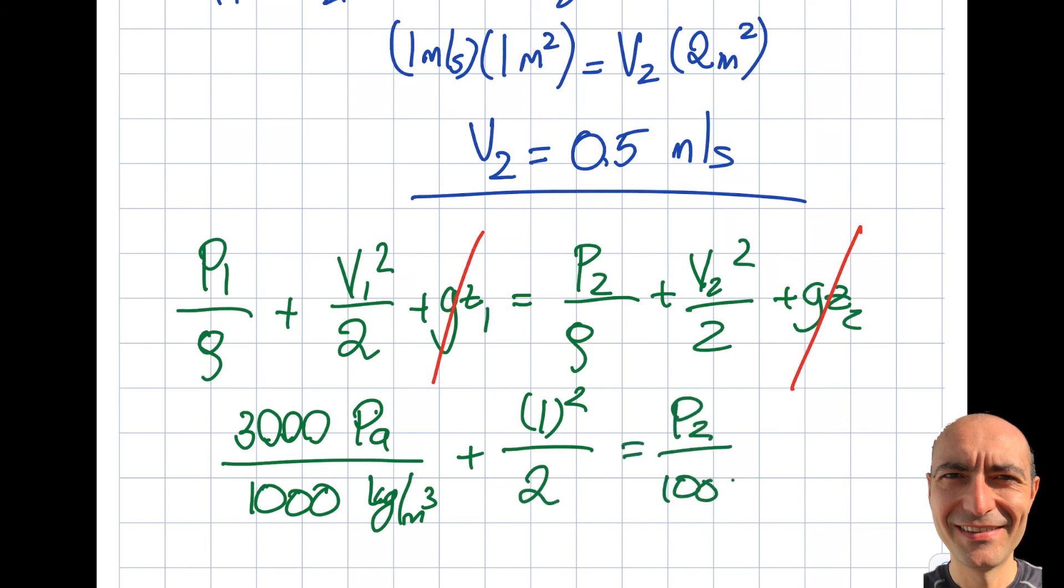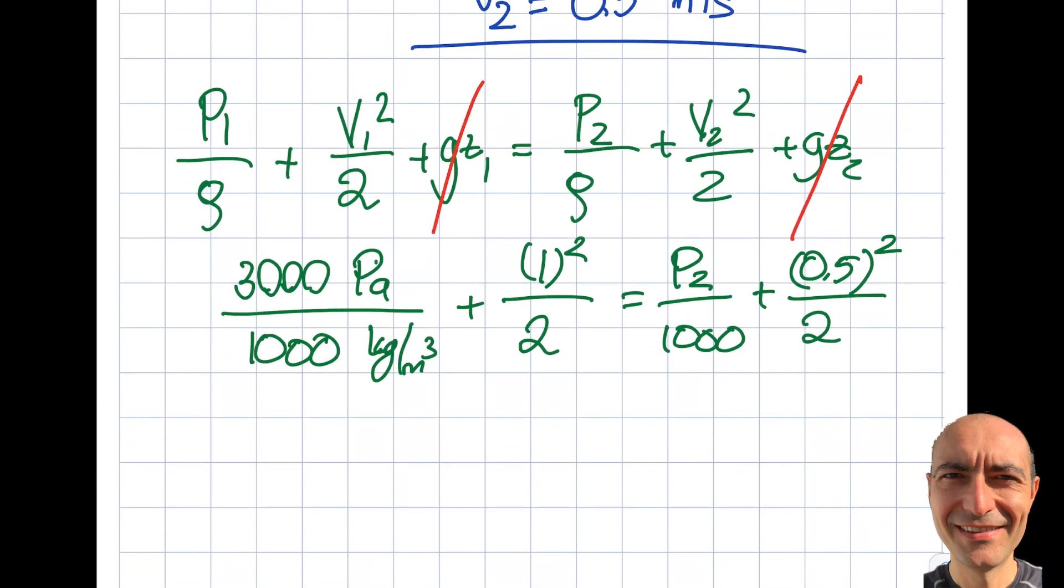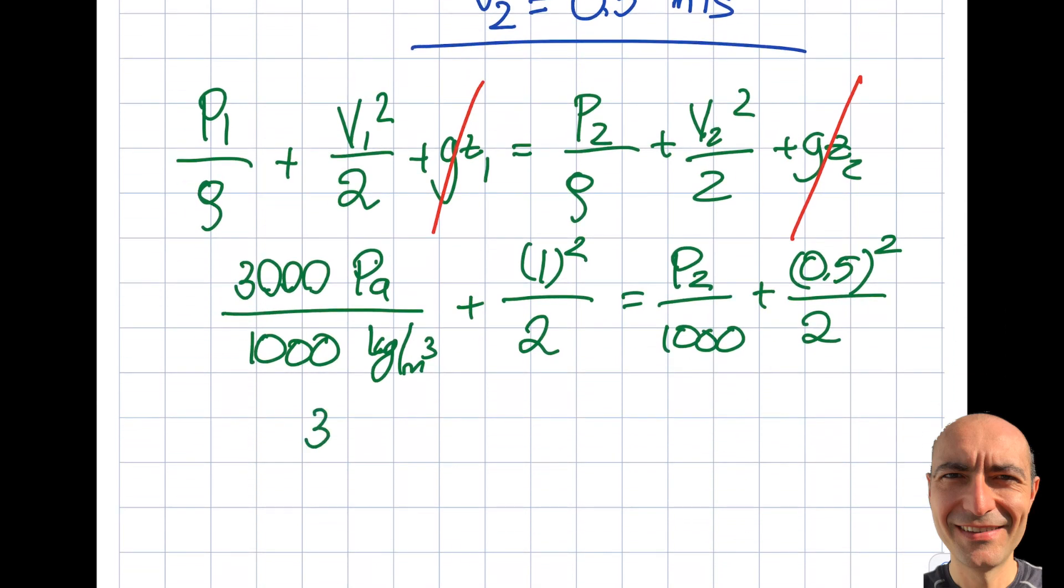Plus v1² over 2 equals p2 over 1000 plus v2² over 2. v1 is 1, v2 is 0.5. This is 3, this is 0.5, 0.25/2 is 0.125. From here I get p2 to be 3375 Pa after multiplying by 1000.